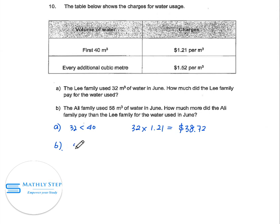58 is greater than 40, so we need to separate this 58 to 40 and 58 minus 40, which is equal to 18. For the first 40 cubic meters, the Ali family will need to pay 40 times 1.21 equals $48.40. For the subsequent 18 cubic meters, 18 times 1.52 equals $27.36.